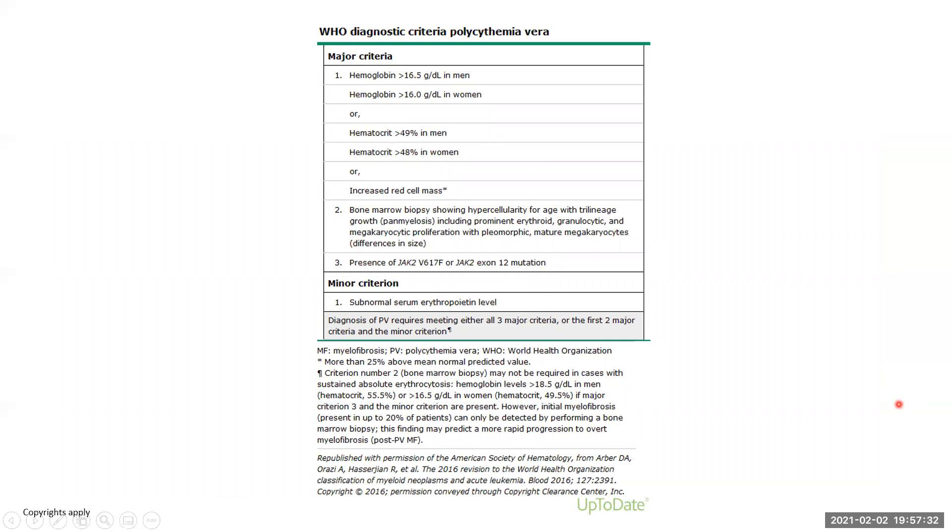Here is the World Health Organization diagnostic criteria for polycythemia vera. As we mentioned, there are hemoglobin and hematocrit cutoffs, bone marrow biopsy showing hypercellularity or a presence of JAK2 mutation, and then a minor criterion is a subnormal or low serum EPO level. The diagnosis of PV requires meeting all three major criteria, or the first two major criteria and the minor criteria which our patient did meet.